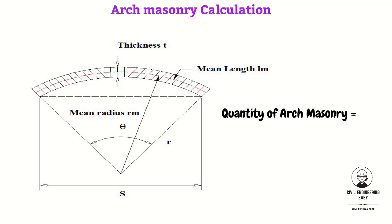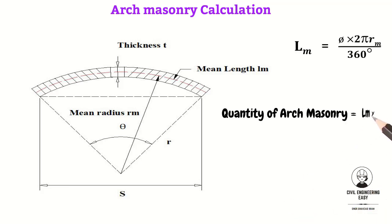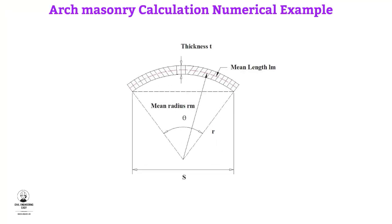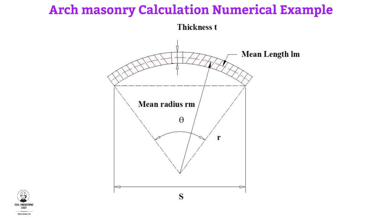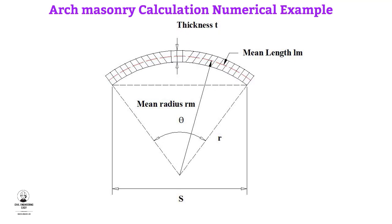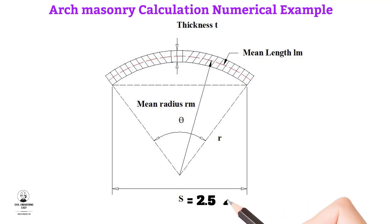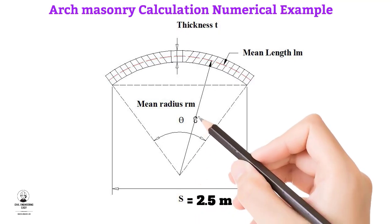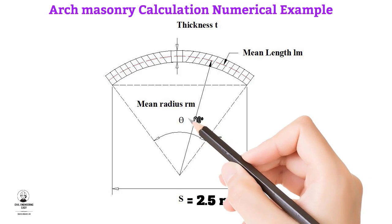Now we are in a position to find out the quantity of arch masonry. The quantity of arch masonry equals mean length multiplied by the width of the wall multiplied by the thickness of the arch. For better understanding, let's consider a numerical example.